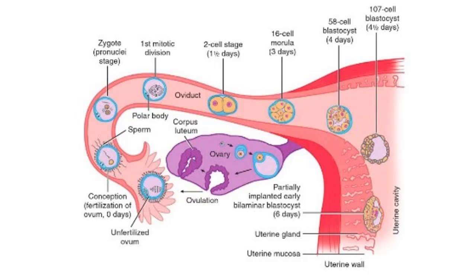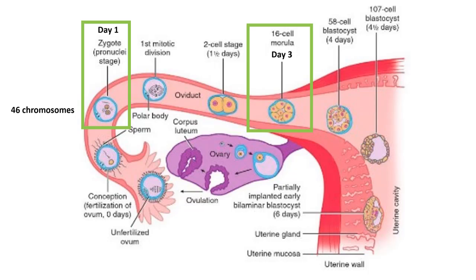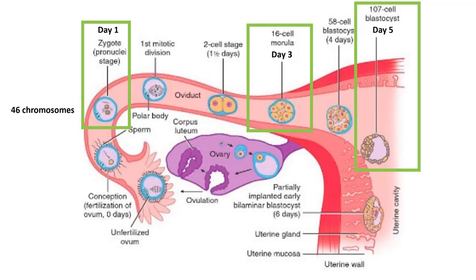Once an egg is ovulated, it is viable for fertilization for 24 hours. When sperm and egg combine, the cell has 46 chromosomes and is called a zygote — day one. By day three, it is a solid ball of cells called the morula, still traveling down the fallopian tube. By day five, it becomes a blastocyst, differentiated into an inner cell mass (future embryo) and an outer shell for implantation and development of support structures like the placenta. By days five to seven, the blastocyst can implant into the endometrium.